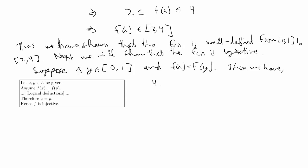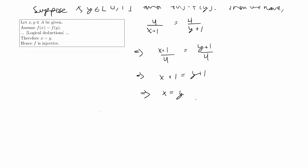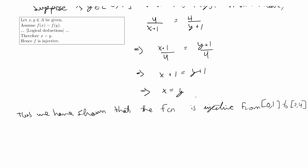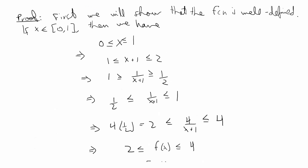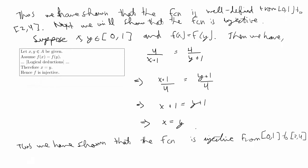Since f(x) = 4/(x+1) and f(y) = 4/(y+1), setting them equal and taking the reciprocal gives (x+1)/4 = (y+1)/4. Multiplying by 4 gives x+1 = y+1, and subtracting 1 from both sides gives x = y. Thus we have shown the function is injective from [0,1] to [2,4], noting we specify the domain and range since injectivity only applies where the function is well-defined.